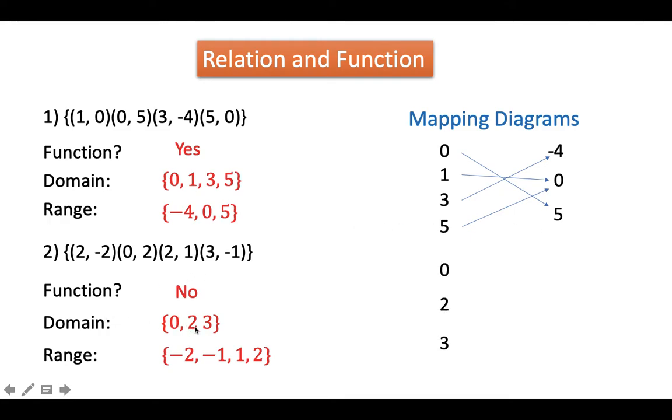While in given number 2, wherein the domain is 0, 2, 3, and the range is negative 2, negative 1, 1, 2. If x is 0, y is 2; if x is 2, y is negative 2. But the same x, which is 2, gives us a different value, which is 1. If x is 3, y is negative 1. In this given here, wherein it gives us 2 different values of output in 1 input, this tells us that it is not really a function.